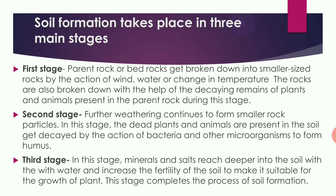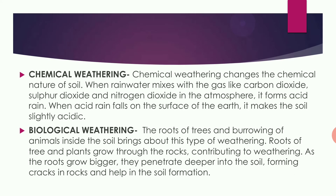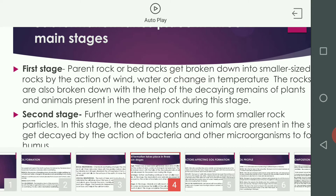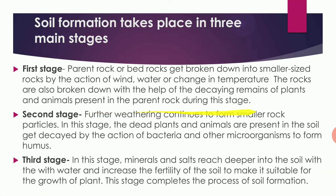Soil formation takes place in three main stages. In the first stage, the parent rock or bedrock gets broken down into smaller-sized rock particles by the action of wind, water, and change in temperature. The rocks are also broken down with the help of decaying remains of plants and animals present inside the parent rock during this stage.